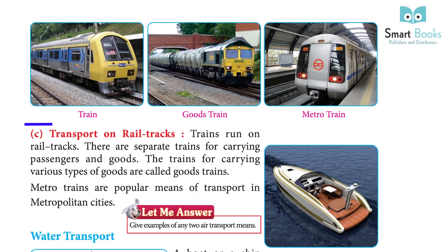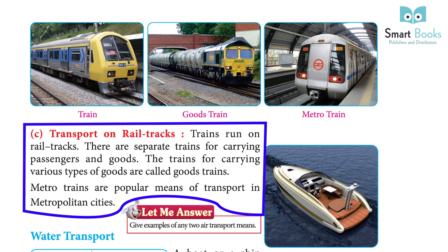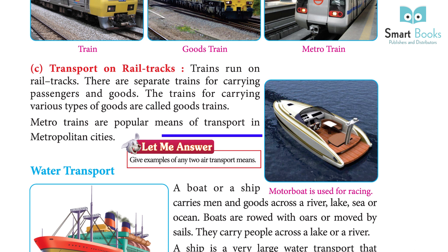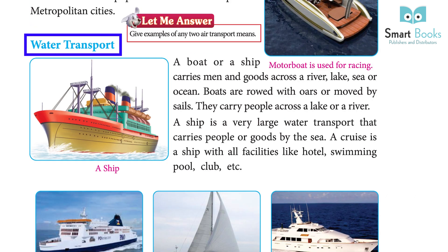Transport on rail tracks: trains run on rail tracks. There are separate trains for carrying passengers and goods. The trains for carrying various types of goods are called goods trains. Metro trains are a popular means of transport in metropolitan cities.